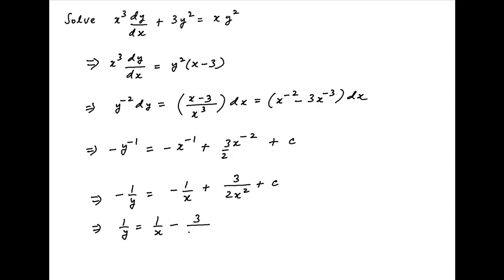Multiplying both sides by minus 1 we get 1 upon y is equal to 1 upon x minus 3 upon 2x square minus c.